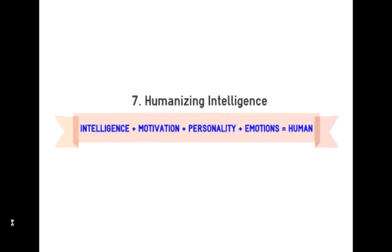Finally, number seven: humanizing intelligence. We're starting to understand that intelligence doesn't make a person human. A human is comprised not only of intelligence but also their motivations to complete something, their personality, and their emotions. So measuring and judging somebody according to an intelligence test is not really fair — it's only one aspect of being a human. We're starting to see intelligence as being one part of the whole, and not the most important thing.